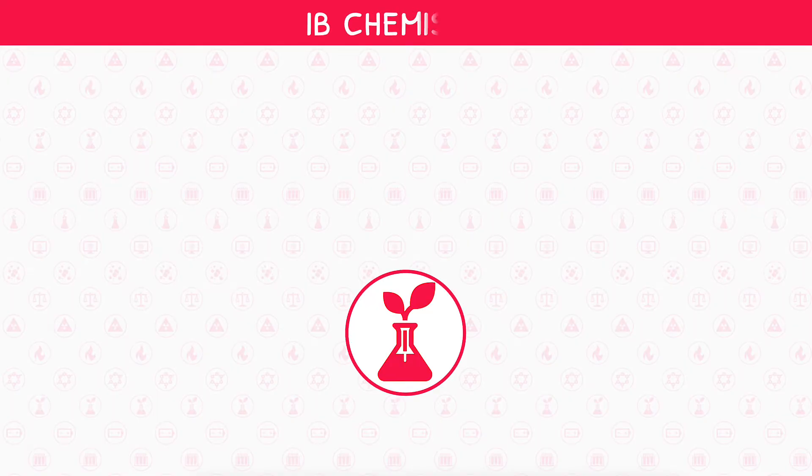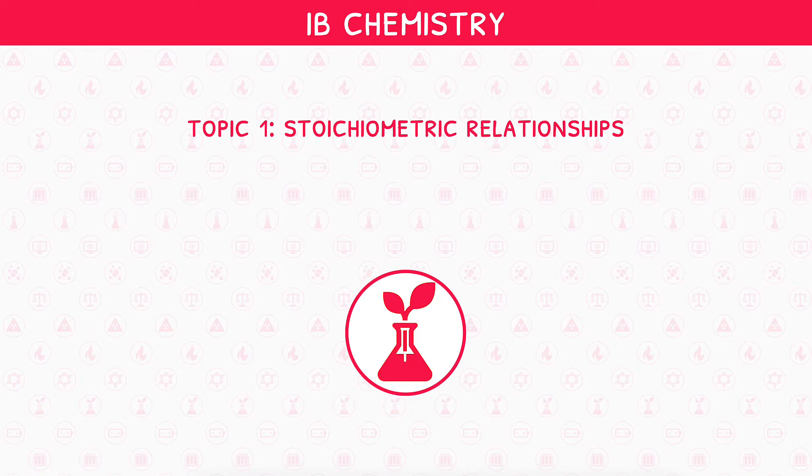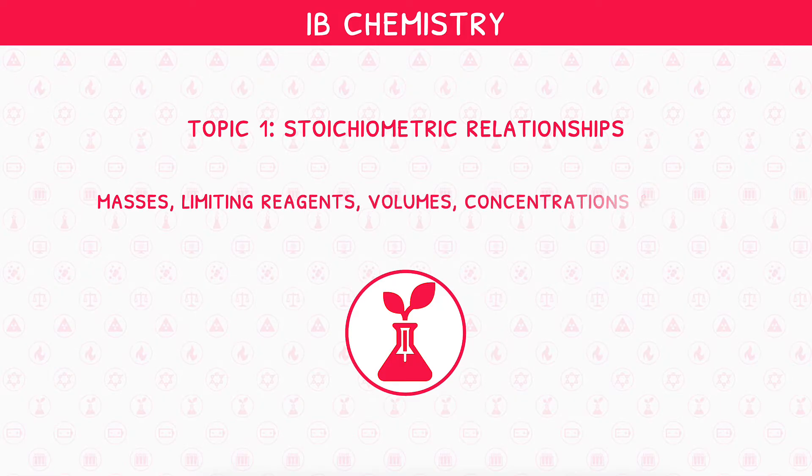Welcome back to our IB Chemistry video series. This is the third and final video in IB Chemistry Topic 1, Stoichiometric Relationships. In this video, we will be looking at calculations surrounding masses, limiting reagents, volumes, concentrations and yields.